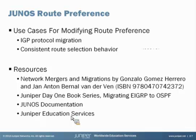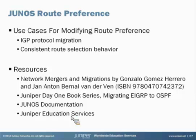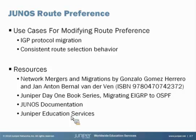There are several resources for modifying the route preference value. One book I would highly recommend is Network Mergers and Migrations, which has classic examples of modifying route preference. We also have a Day One book, Migrating EIGRP to OSPF, available on our website — a classic example of IGP protocol migration. We have resources on our documentation website and several classes that talk about route preference, including Junos Routing Essentials as well as Junos Intermediate Routing. I hope you found this useful — please feel free to visit us anytime.